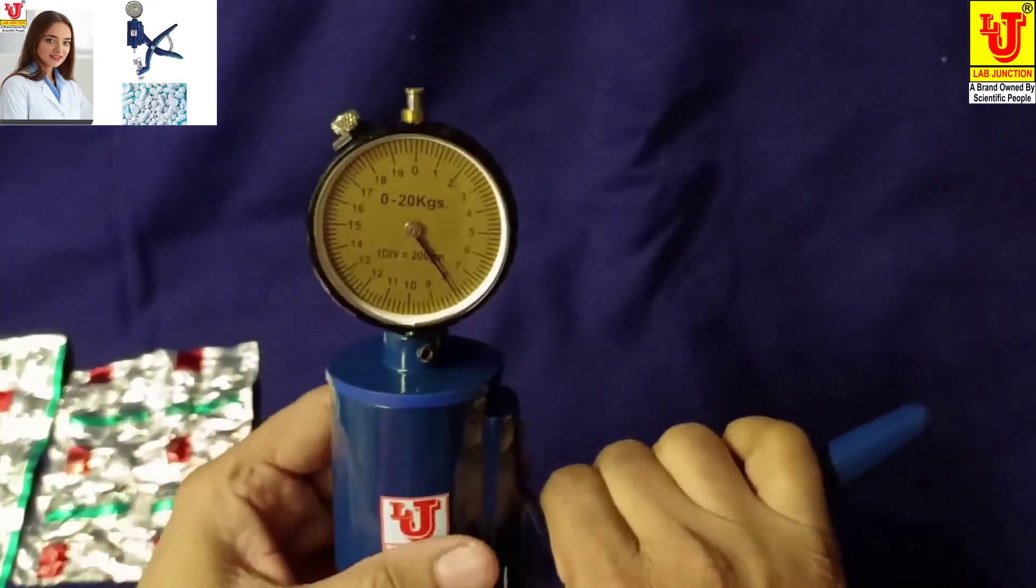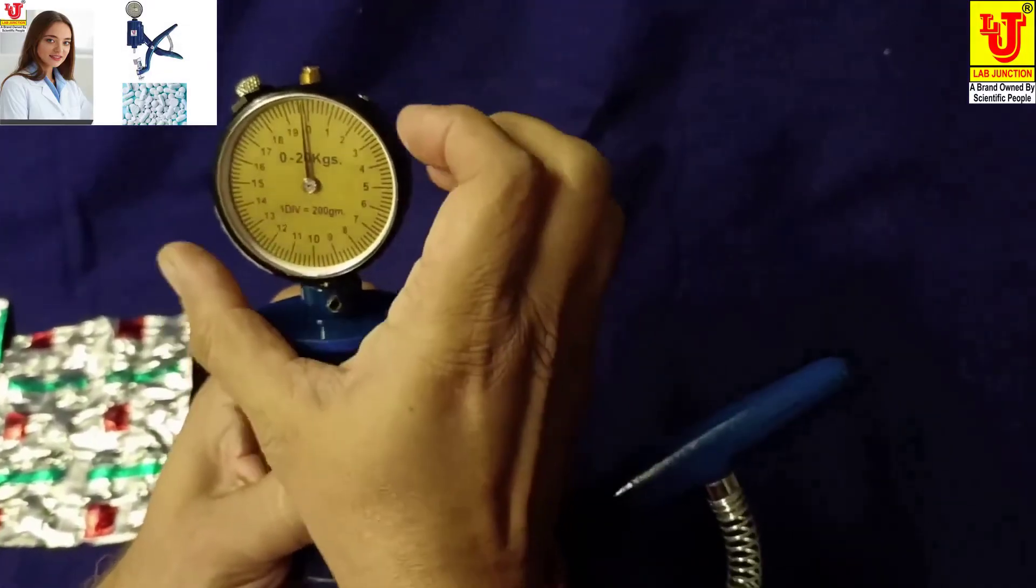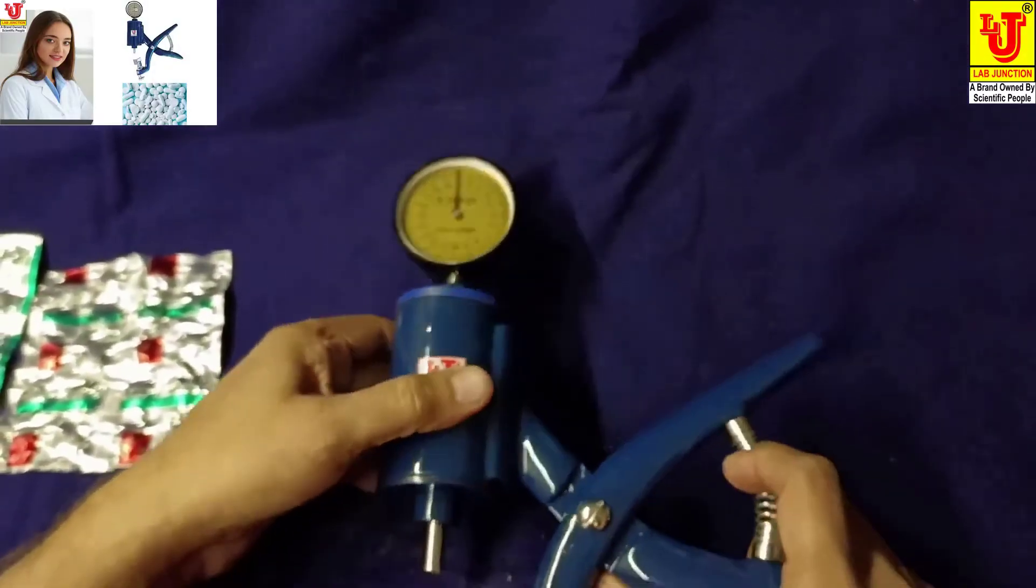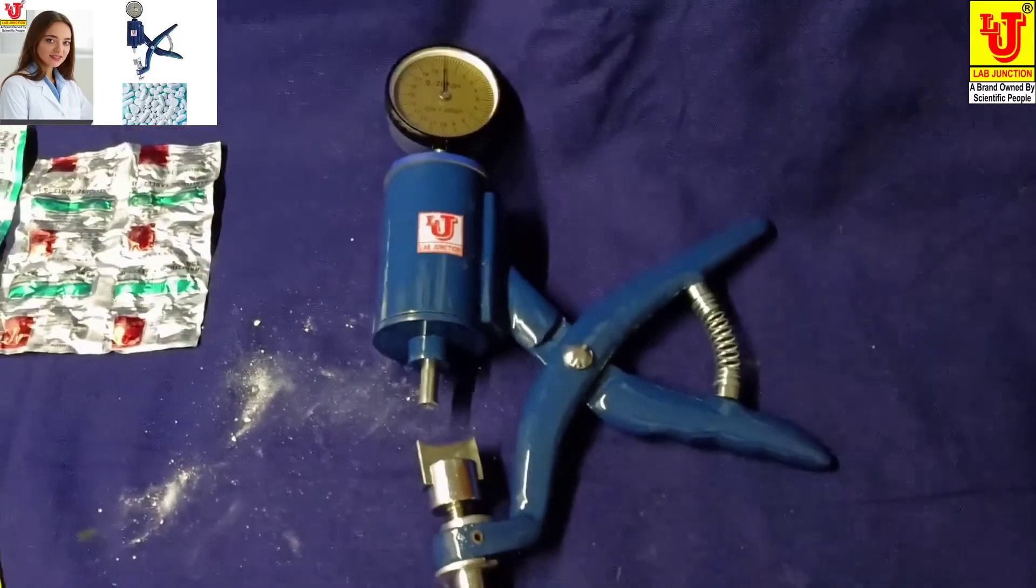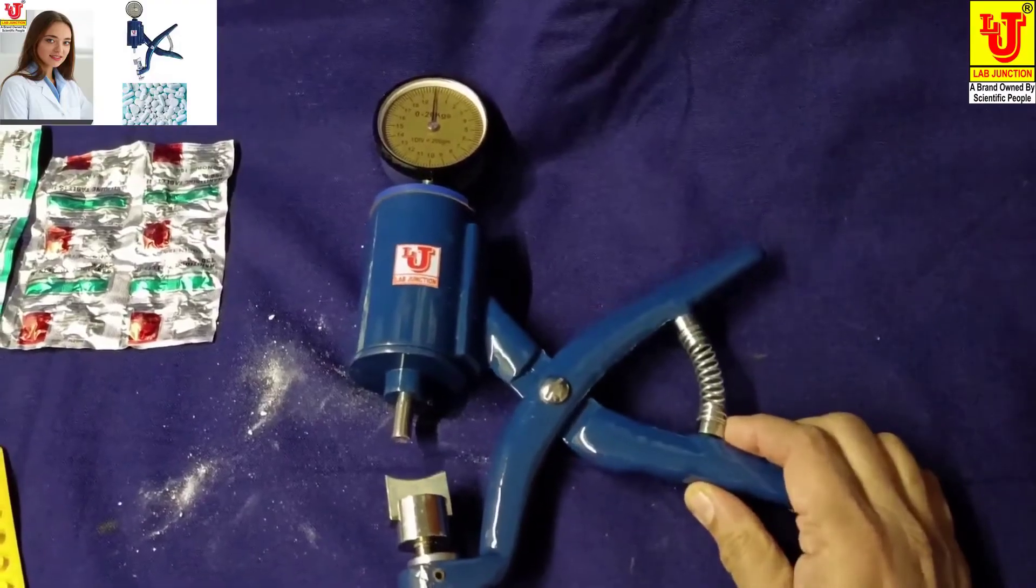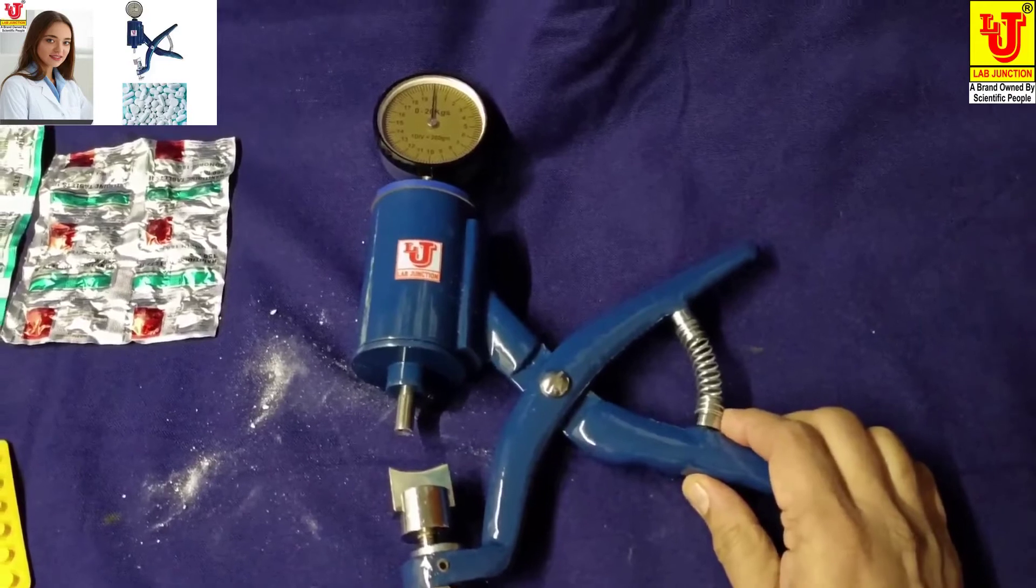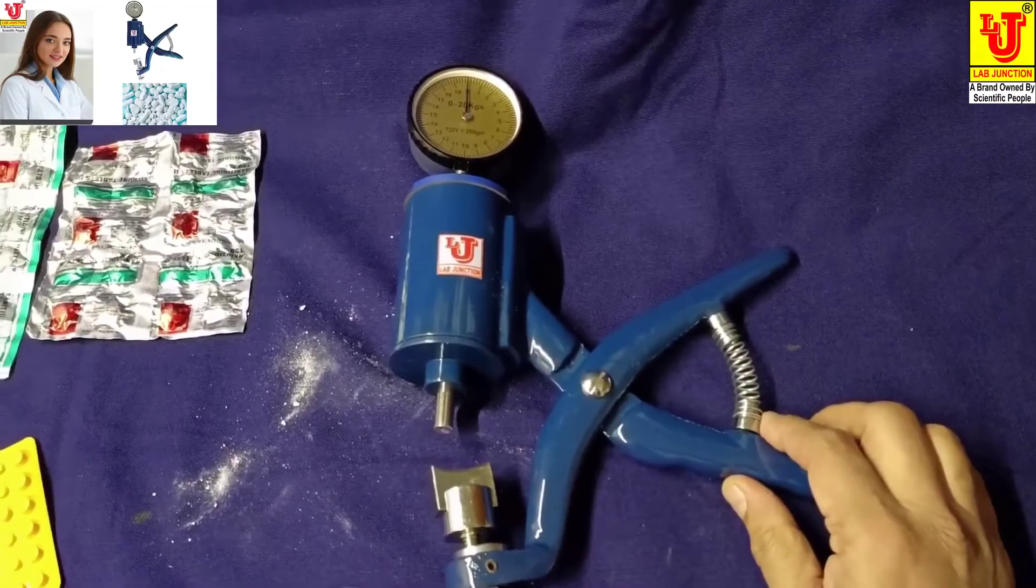This is how you use the P Pfizer type hardness tester. This is the complete demonstration of this instrument. Lab Junction gives one year warranty other than breakage.